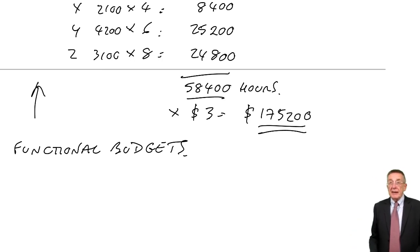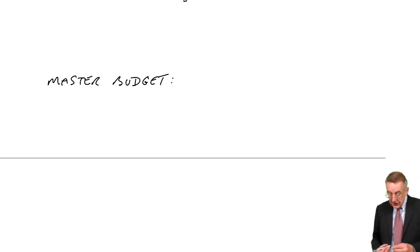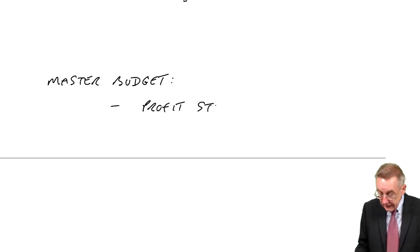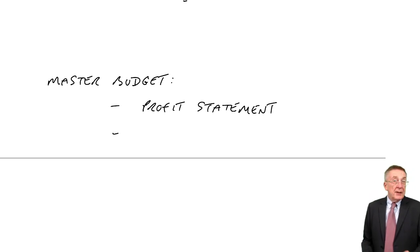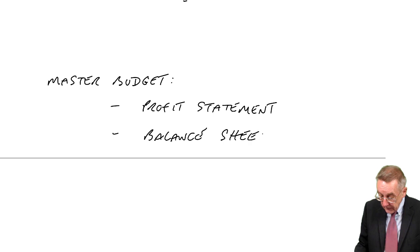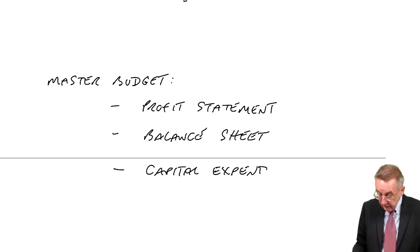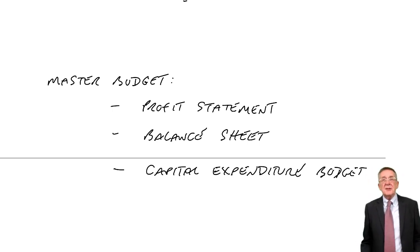All the relevant managers will be given their bit of the budget. As I said, we normally put them all together at the end and prepare what's called a master budget. The master budget will normally be a budgeted profit statement, usually but not always a budgeted balance sheet or statement of financial position, and very commonly a capital expenditure budget. By capital expenditure, we're talking about buying new machines and things. Because of the cost involved, we like to have prepared a separate budget saying we'll spend $100,000 on a new machine in January or $50,000 on new cars in June or whatever.